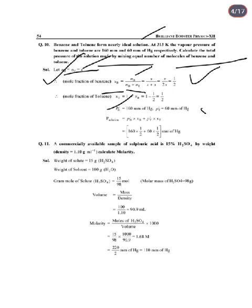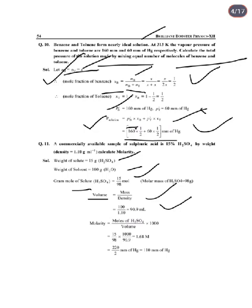Next numerical: Partial vapor pressure of pure benzene = 160 mmHg and toluene = 60 mmHg. Total vapor pressure of solution is calculated using: P_total = P°_benzene × X_benzene + P°_toluene × X_toluene. For sulfuric acid problem: commercially available H₂SO₄ is 15% by weight, density 1.10 g/mL. Weight of solute = 15 g per 100 g solution. Moles of H₂SO₄ = 15/98. Molarity = (moles/volume in L) × 1000 = 1.68 M.